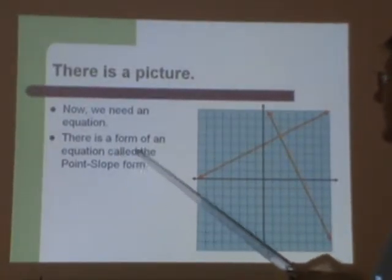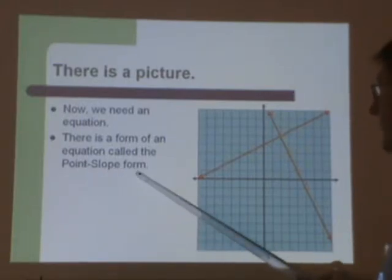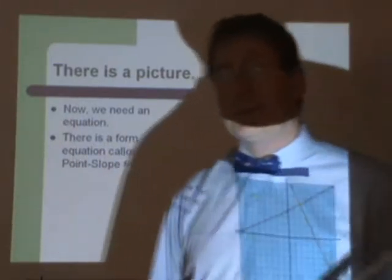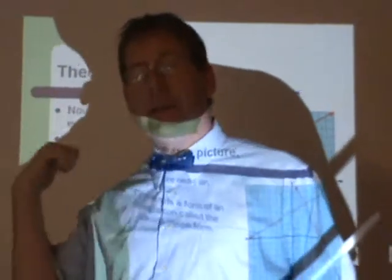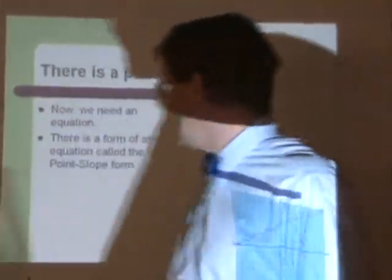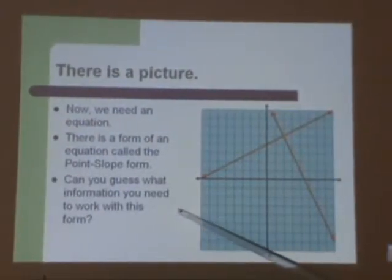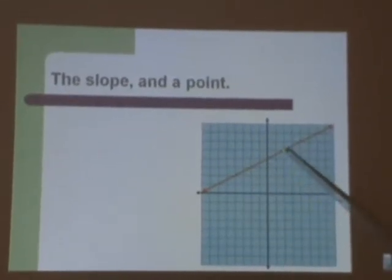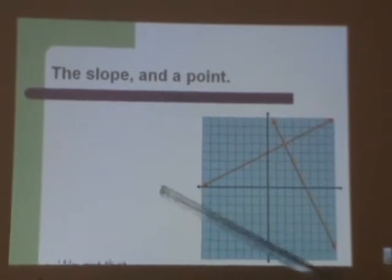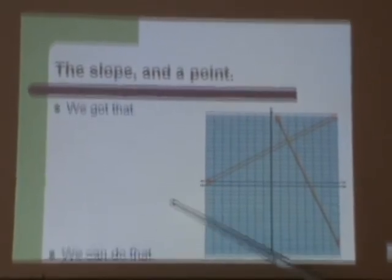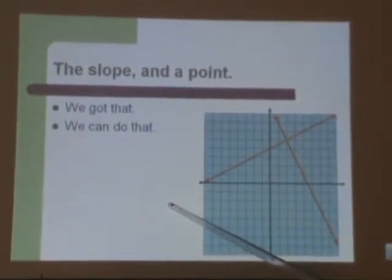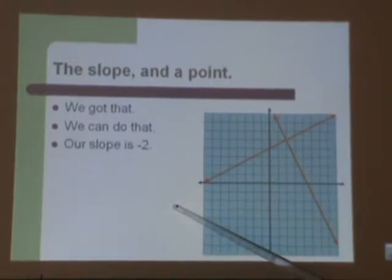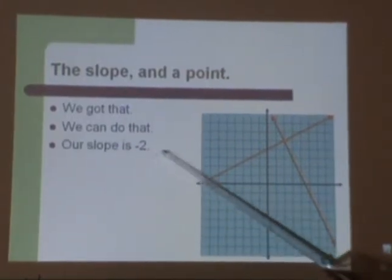We know that this point is in it, and we know that its slope is going to be negative 2. We need an equation though. There is a form of an equation called a point-slope form, and one of its main purposes is to take care of this problem for us.